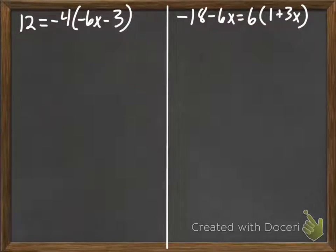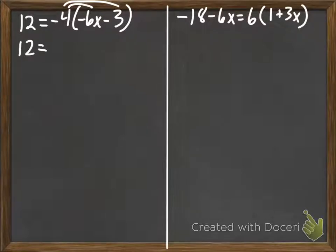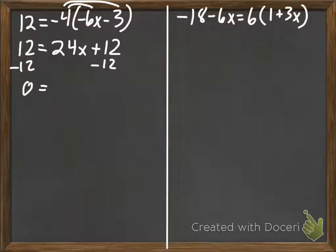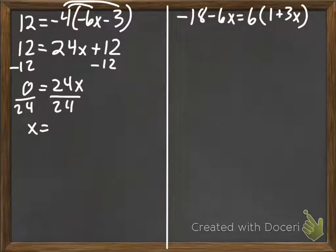Here we have just two more examples, but now we've thrown in the distributive property. Same idea — we're going to combine like terms, but we can't, so we're just going to simplify the right side of the left equation by distributing. We get 12 equals: two negatives make a positive, so 24x. Negative 4 times negative 3 is positive 12. We don't have anything else to combine, so we subtract 12 from both sides. We get 0 equals 24x, and dividing by 24 gives x equals 0.